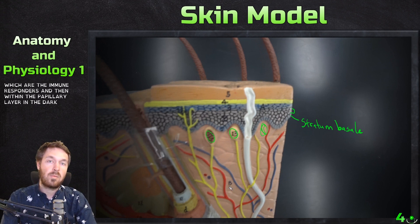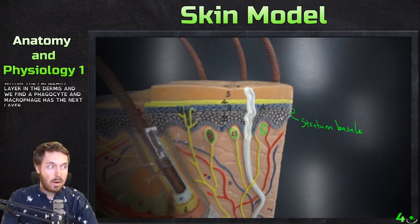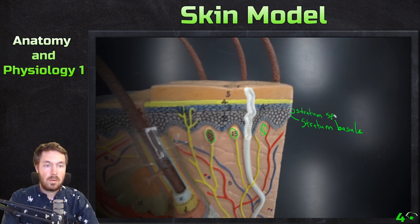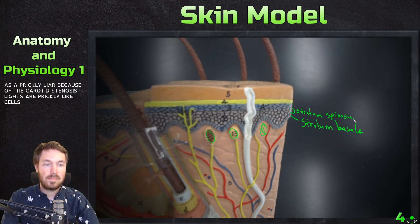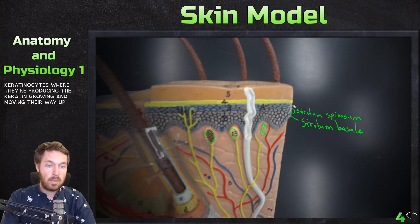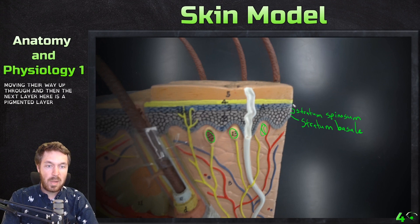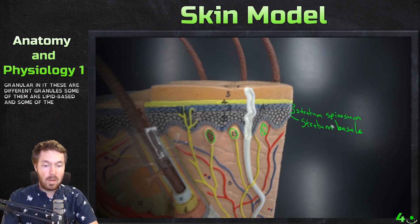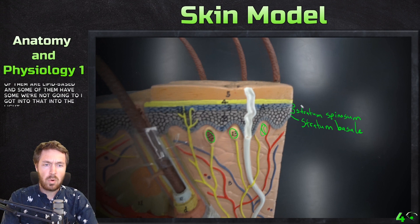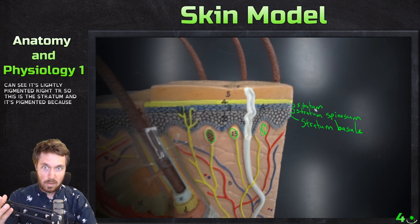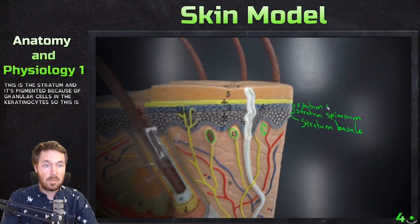Within the papillary layer of the dermis we find phagocytes and macrophages. The next epidermal layer is the stratum spinosum — sometimes known as the prickly layer because the keratinocytes have prickly-like projections. These keratinocytes are producing keratin as they grow and move upward. The next layer is the stratum granulosum — it appears slightly pigmented because of granular cells within the keratinocytes, containing lipid-based and other types of granules.